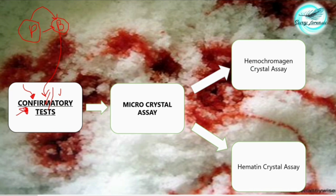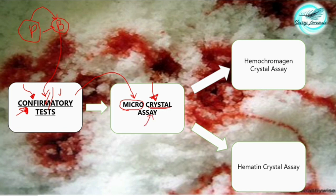The confirmatory tests are also called micro crystal assays. 'Micro' means microscopic, and the products obtained after carrying out these tests are crystals which are microscopic in nature. So after adding the reagents, we carry out the examination under a microscope and look for the crystals.